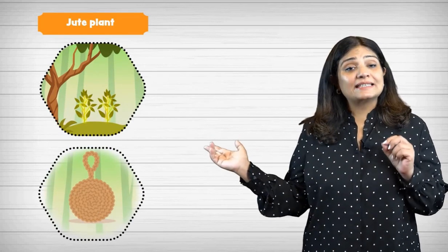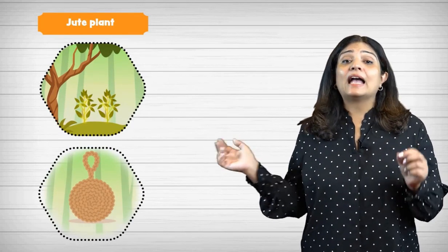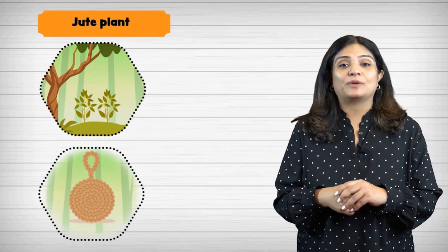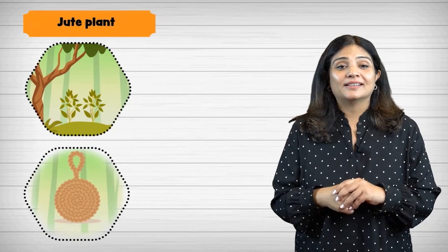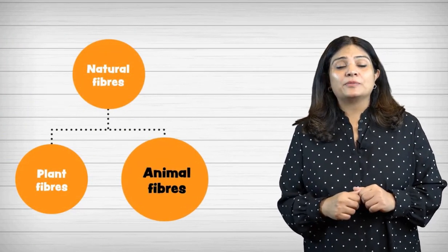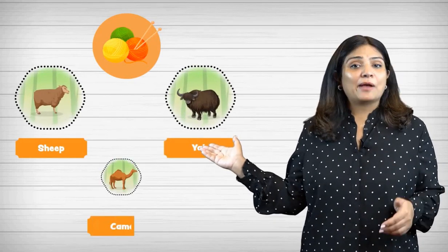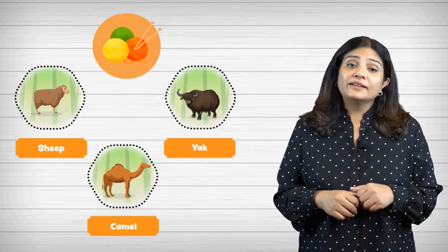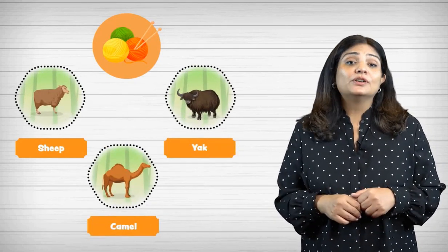We get jute from the stem and outer skin of the jute plant. One example of animal fibers is wool, which we get from the body hair of animals such as sheep, yaks, and camels.